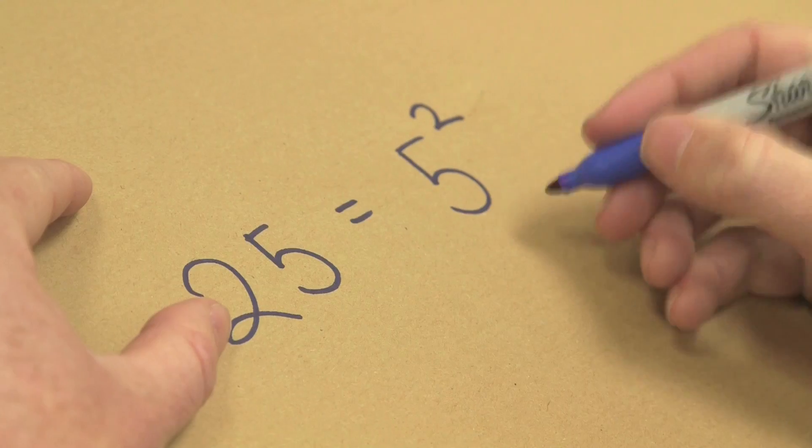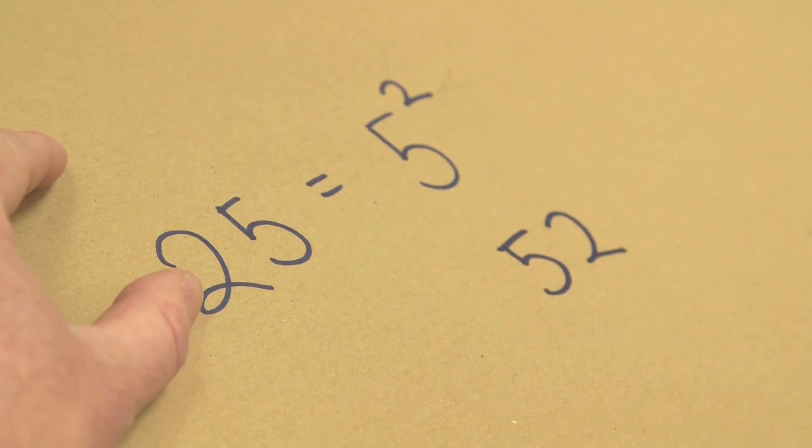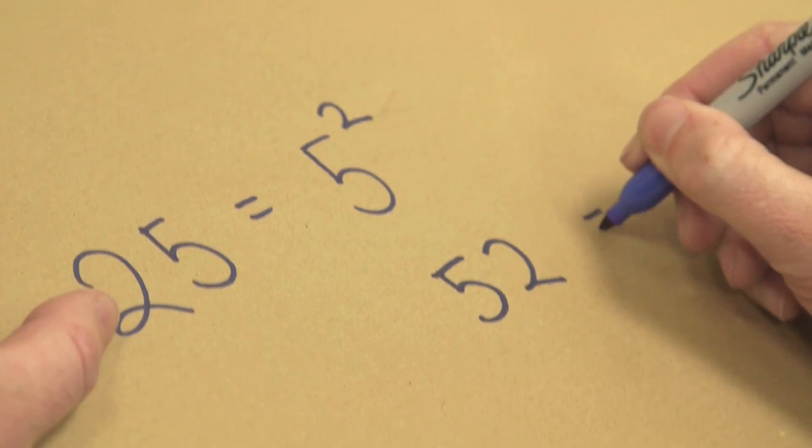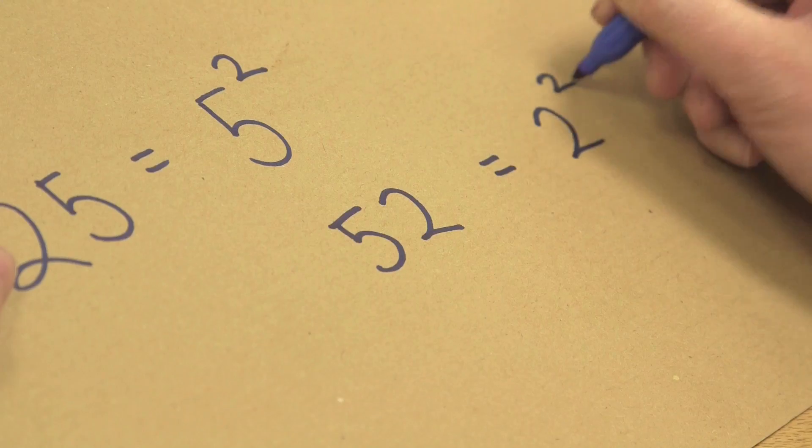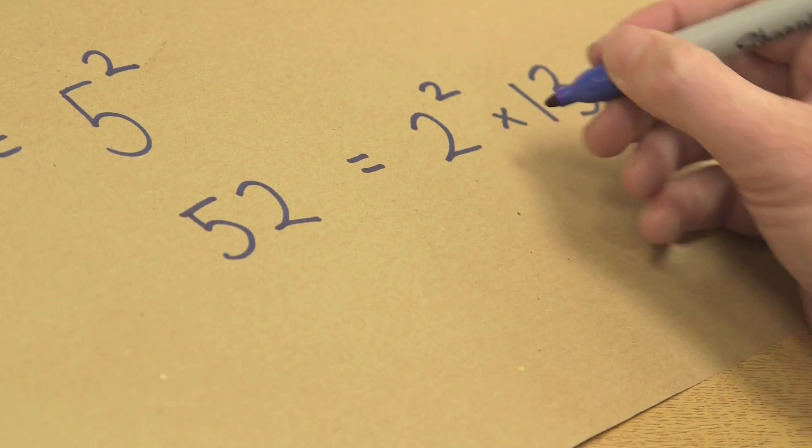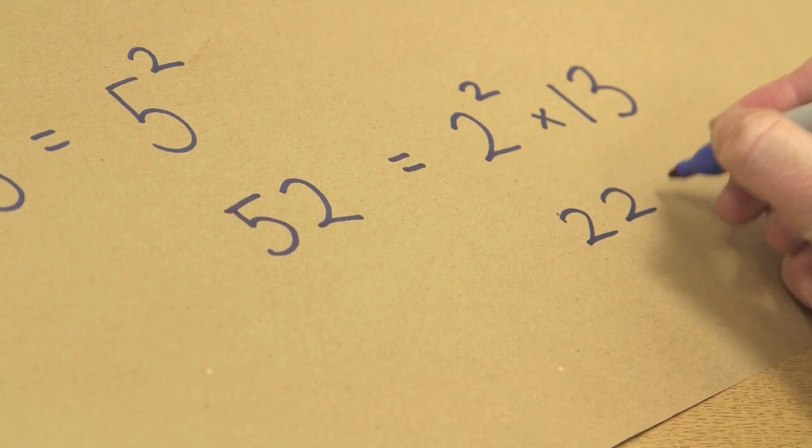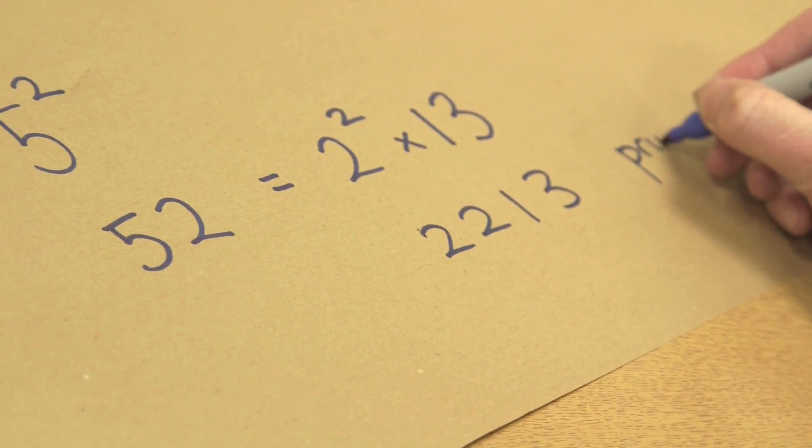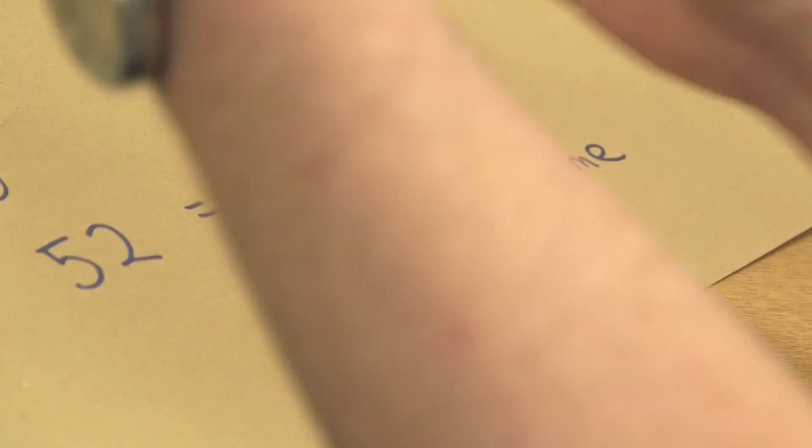So 5 squared, I bring down the 2, so I make 52. 52 is 2 squared times 13. And so I bring down the 2, so that's 2, 2, 1, 3, and that's prime. So it seems to work.